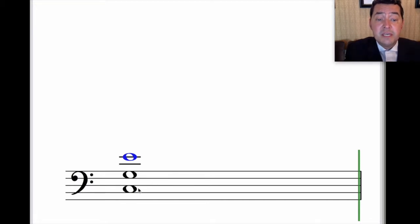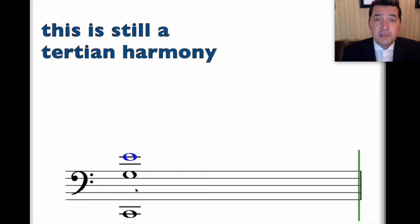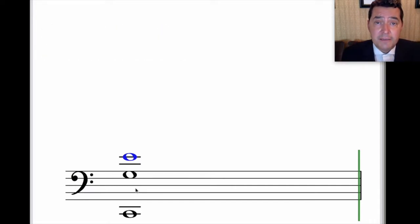Likewise, we could take the C and move it down an octave. And we still have a C triad of some sort. Now, we would still say that this chord is a tertian harmony. Even though we can't see the thirds quite as easily, it's still a group of notes that could be stacked in thirds very easily. So we take the E, move it down an octave, take the C, move it up an octave, and we're back where we started.